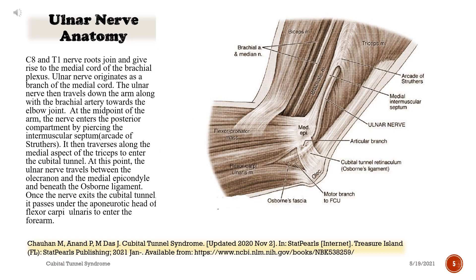Ulnar nerve anatomy. C8 and T1 nerve roots join and give rise to the medial cord of the brachial plexus. The ulnar nerve originates as a branch of the medial cord and then travels down the arm along with the brachial artery towards the elbow joint. At the midpoint of the arm, the nerve enters the posterior compartment by piercing the intermuscular septum — the arcade of Struthers — then traverses along the medial aspect of the triceps to enter the Cubital Tunnel.